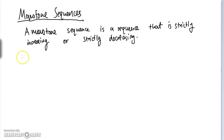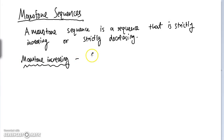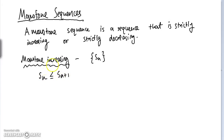We could have what's called a monotone increasing sequence. If Sn is our sequence, then Sn is always less than or equal to Sn plus 1 — in other words, the next term of the sequence is always greater than or equal to the previous term. This means that a sequence that is constant is also monotone increasing.